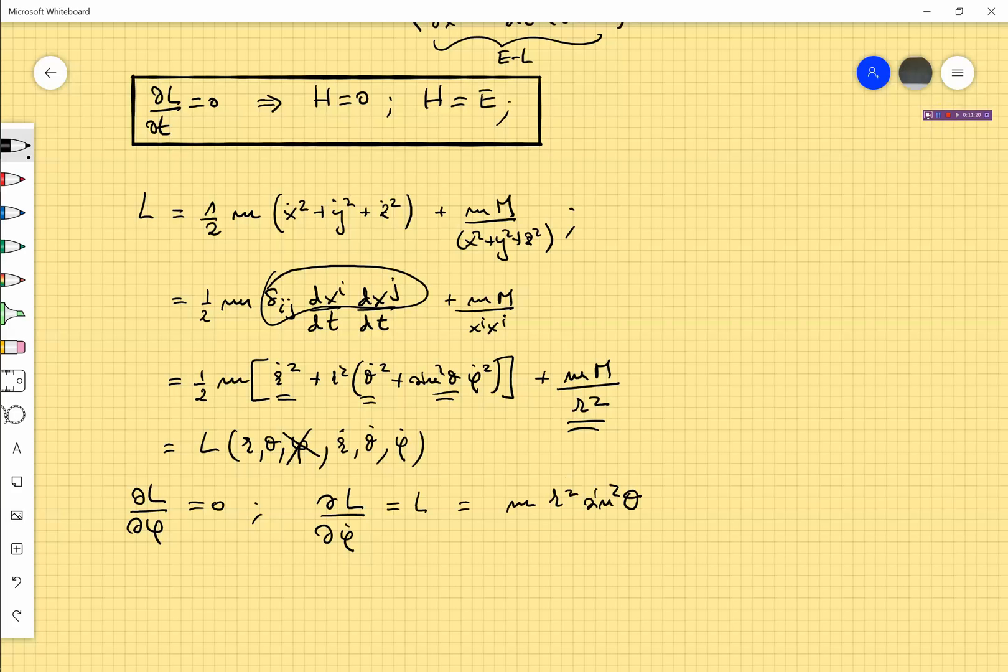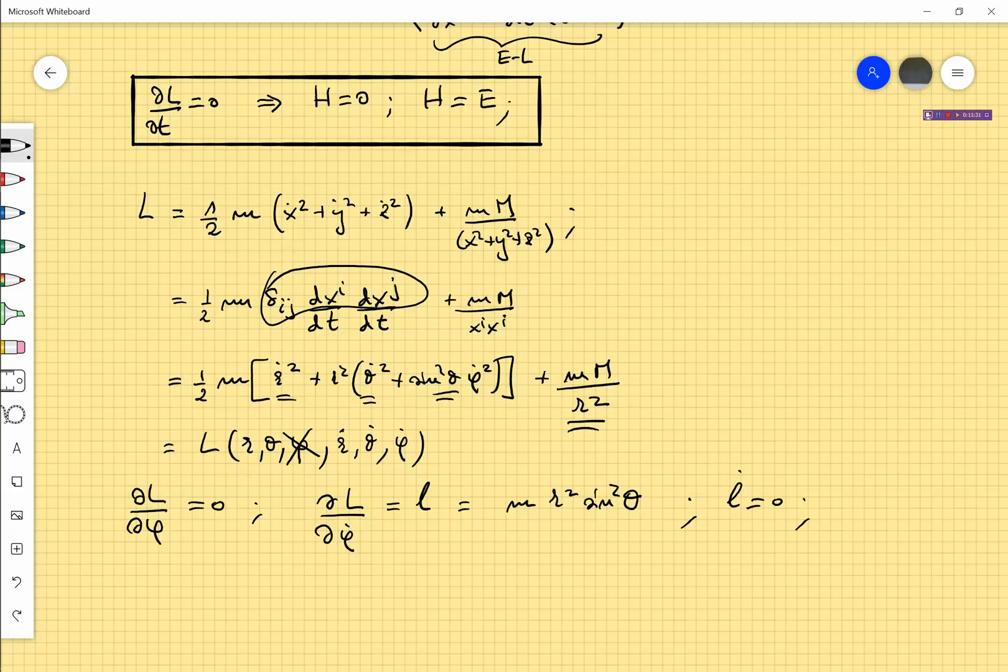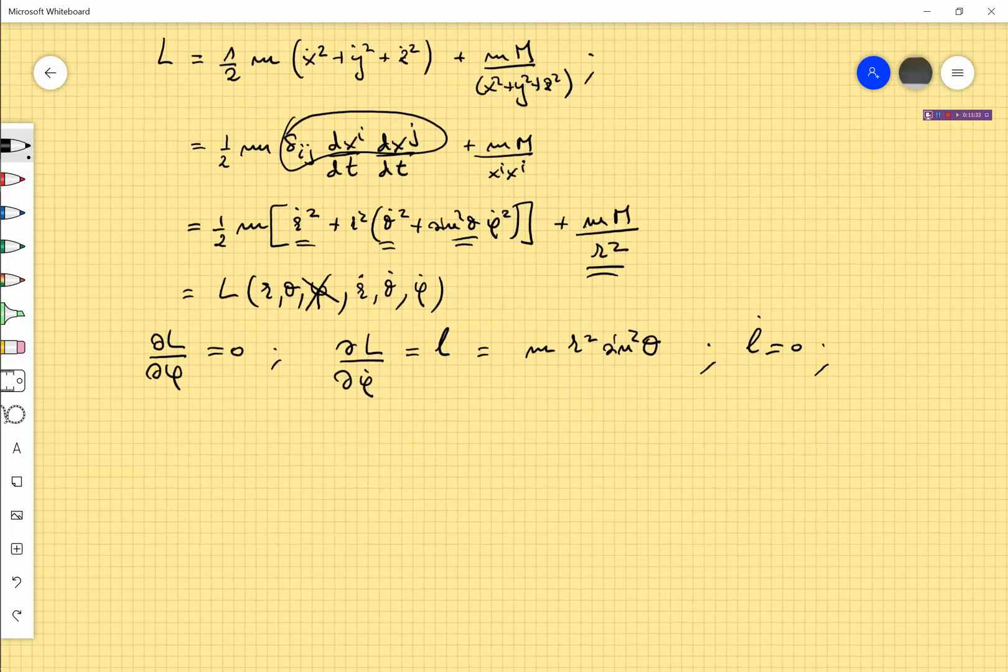And that you can find easily, it's just m times r squared sine squared theta times phi dot, and this satisfies L dot equals zero.